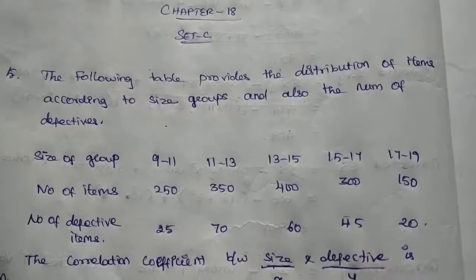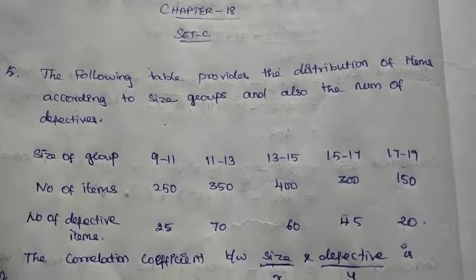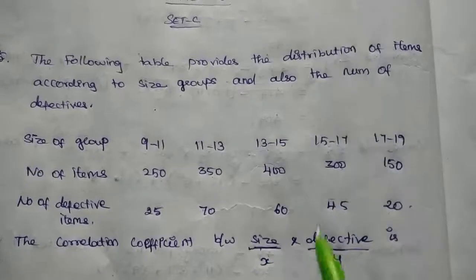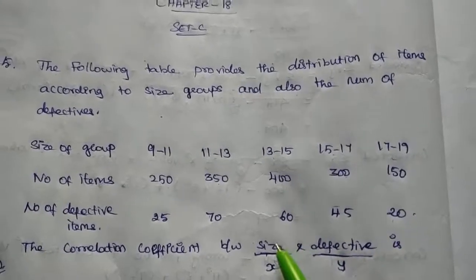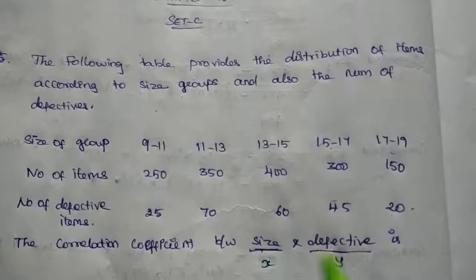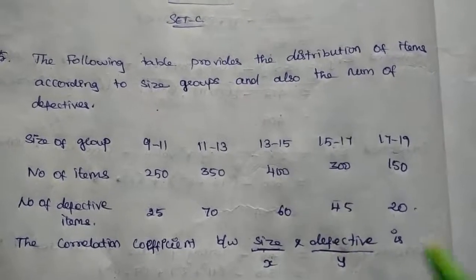First, we'll set up X and Y values. Y is the number of defective items, so we have correlation between X and Y. X and Y are the number of defective items.